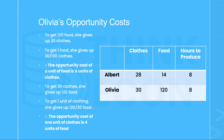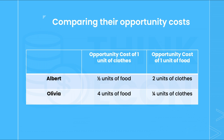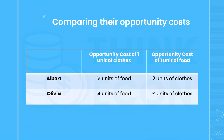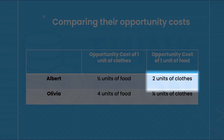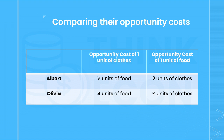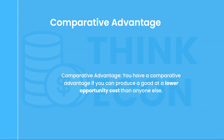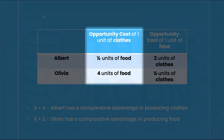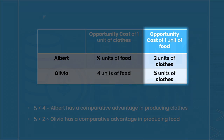Now that we have the opportunity costs of both Albert and Olivia, let's compare them. This table just simplifies the results of our previous calculations. Here we can see that Albert's opportunity cost for one unit of clothes is one half units of food, while Olivia's is four units of food. Alternatively, Albert's opportunity cost for one unit of food is two units of clothes, and Olivia's is one quarter units of clothes. You have a comparative advantage if you produce a good at a lower opportunity cost than anyone else. So looking at our table, it's obvious that Albert has a comparative advantage in producing clothes, as one half is less than four. Therefore, Olivia has a comparative advantage in producing food, as one quarter is less than two.